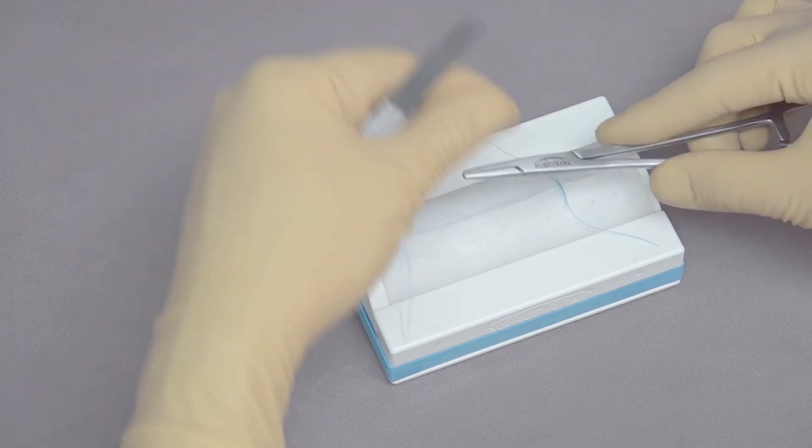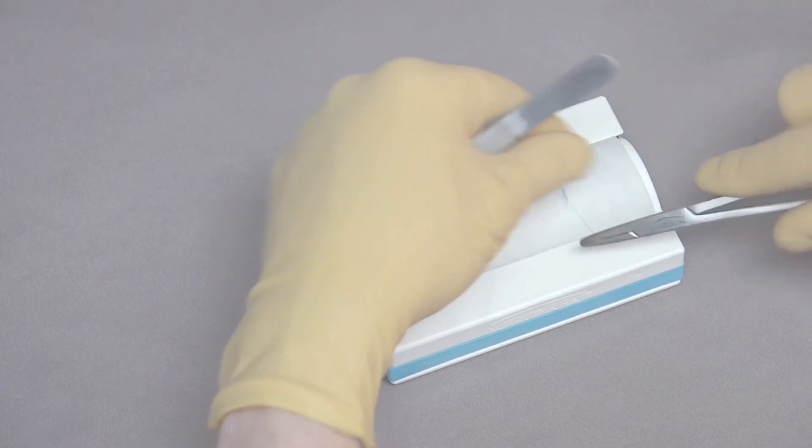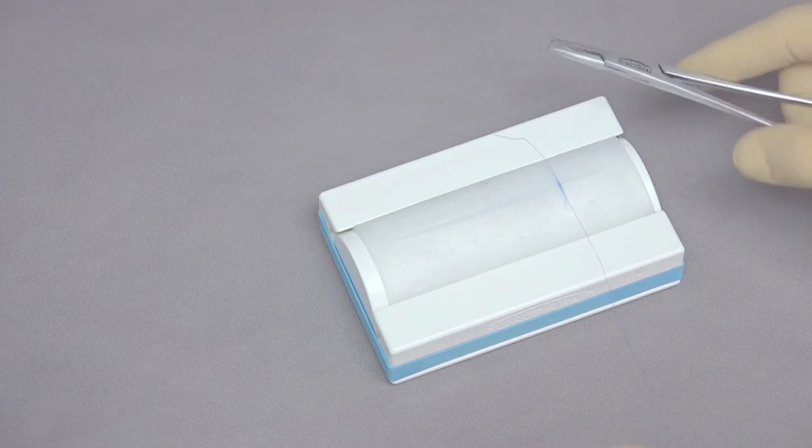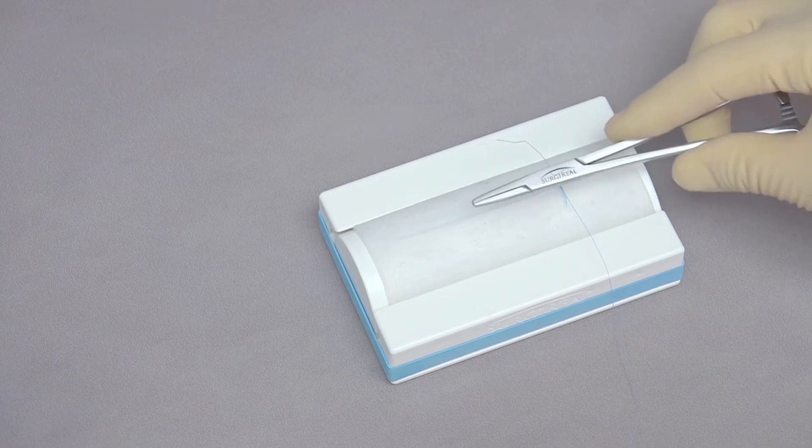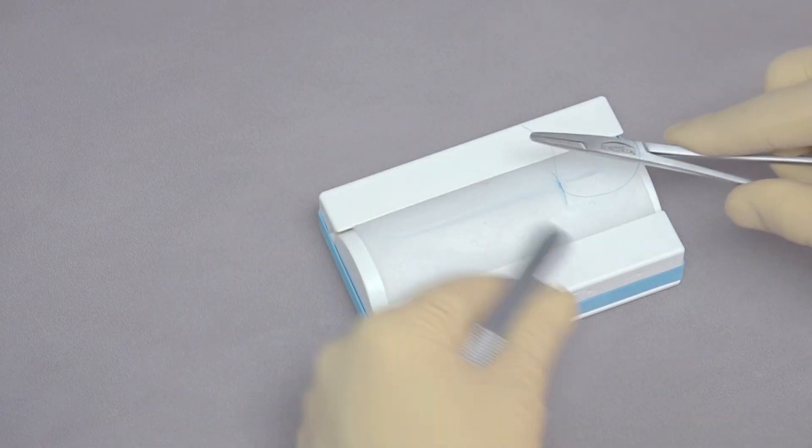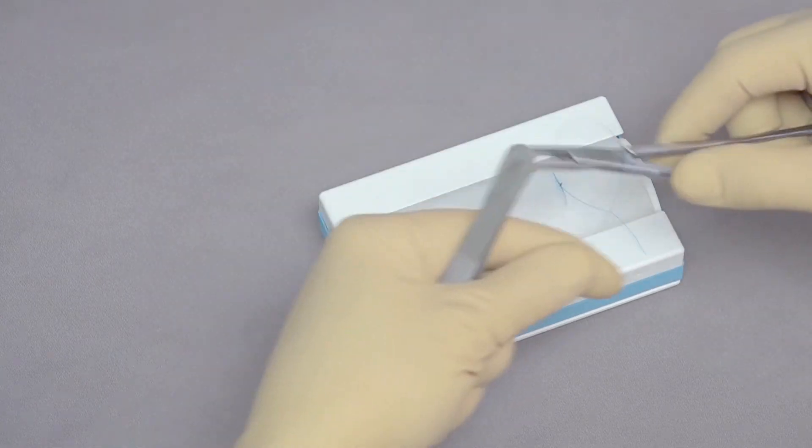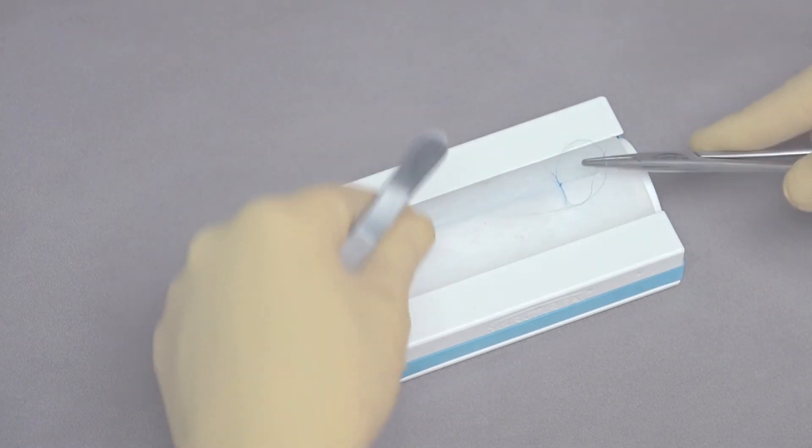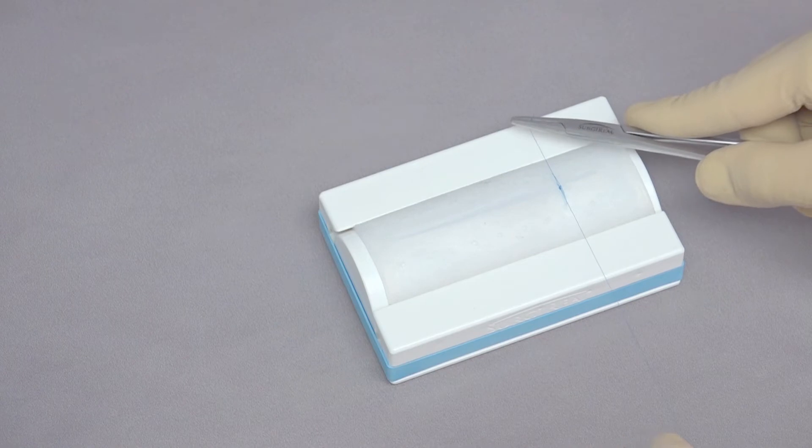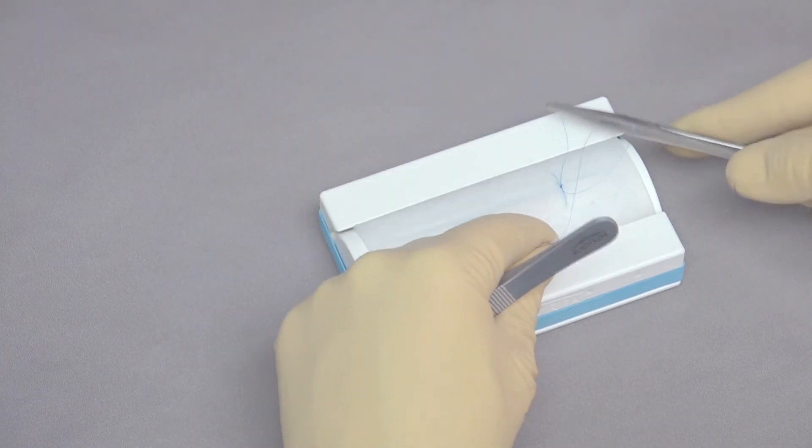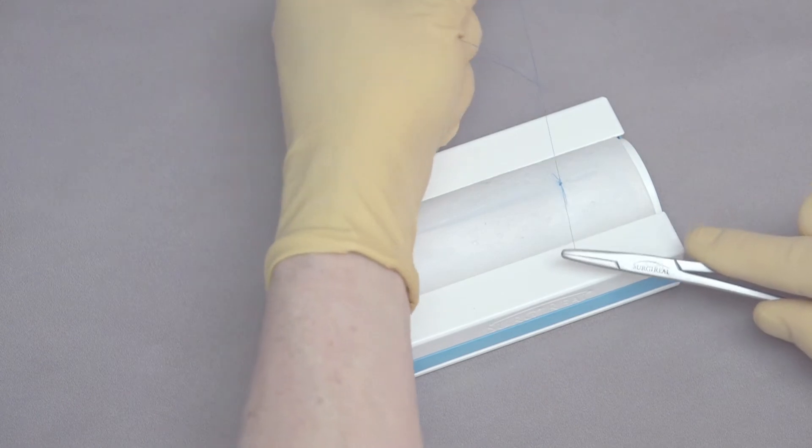Put the needle holder back in the middle, around one time, tighten that down. Be careful, because if you tighten too much, it will get too snug and strangulate the tissue. Needle holder back in the middle for the third throw, a fourth throw. Because we've put a surgeon's throw the first time, we actually have to do five throws, because the first one doesn't count in the knot security.